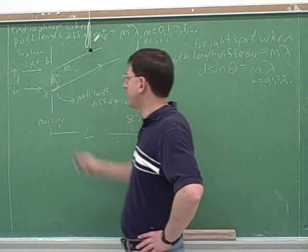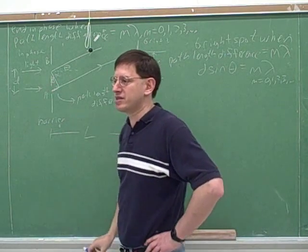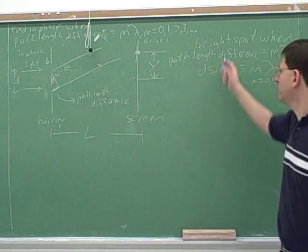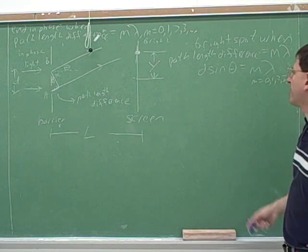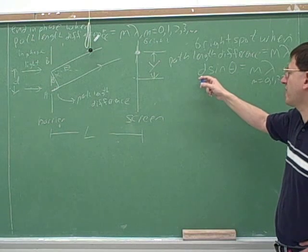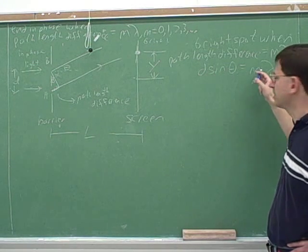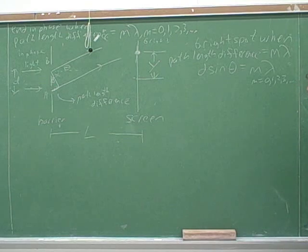And now we know what the d sine theta is. That just turns out to be geometrically the way to find the path length difference. d times the sine of theta turns out to be geometrically the way to figure out what the difference is in the paths. So this is just saying, again, we're going to get a bright spot whenever the path length difference between the two waves calculated by d sine theta is equal to a whole number of wavelengths.